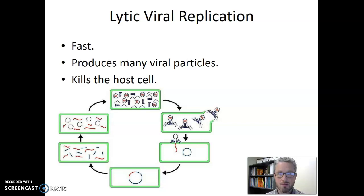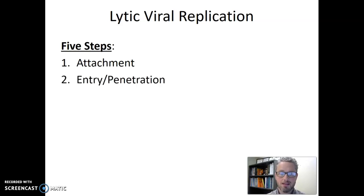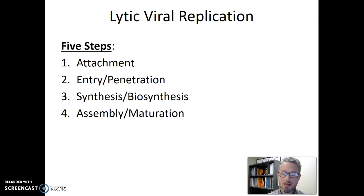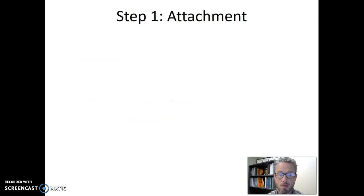Let's think about the steps of the lytic viral replication cycle. We're going to break this replication cycle into five major steps: attachment; entry (sometimes called penetration in some books); synthesis (sometimes called biosynthesis); assembly (sometimes called maturation); and finally release (sometimes referred to as lysis). These steps happen every single time and always in this exact order, so we need to understand each step and be able to put them in the correct order.